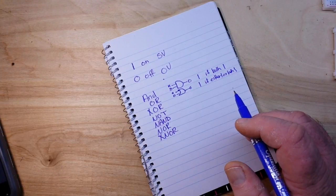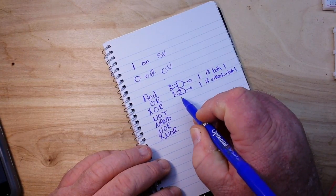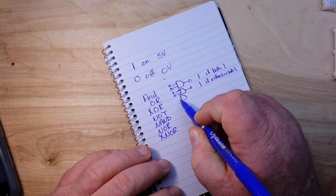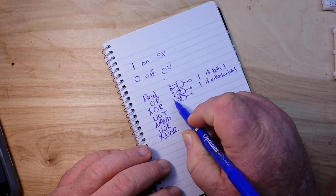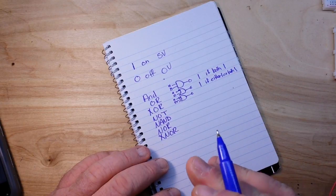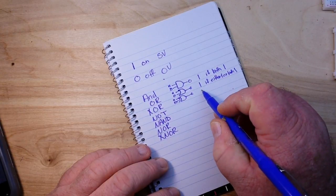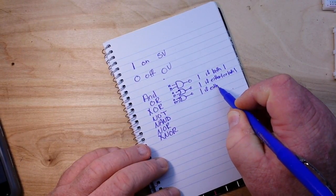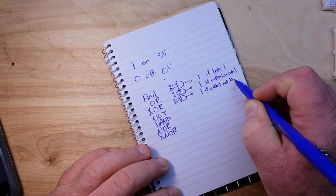Next we have the exclusive OR, the XOR, and it is drawn like this. The XOR gate: the output is true if either but not both inputs are true.